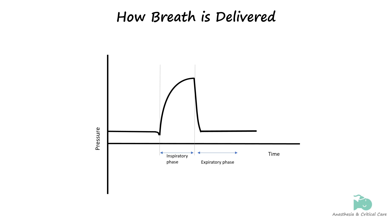Before reviewing the graphics associated with mechanical ventilation, it's important to understand how ventilators deliver breaths. A mechanical breath is classified based on three main variables called phase variables. They dictate how the breath starts, how it's delivered by the machine, and how it stops. A breath can be started either by the patient, called a supported or assisted breath, or by the machine, called a controlled breath. This is known as the trigger.